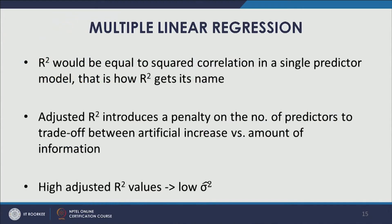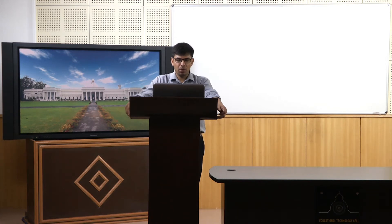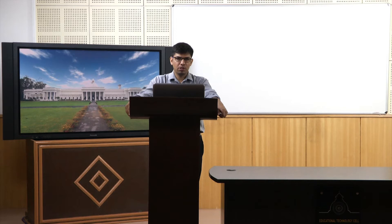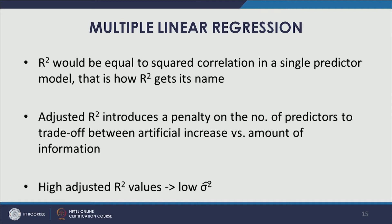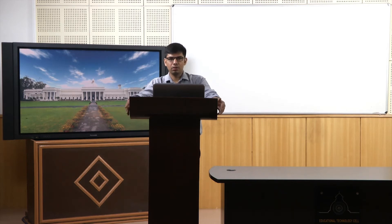Adjusted R-squared introduces a penalty on the number of predictors to trade off between artificial increase versus amount of information. If there are more predictors that are uncorrelated to the outcome variable, they would just be artificially increasing the R-squared value without contributing much information to the model. Adjusted R-squared considers this trade-off and imposes a penalty — we want genuine contribution from predictors in terms of explaining variability in the outcome variable.